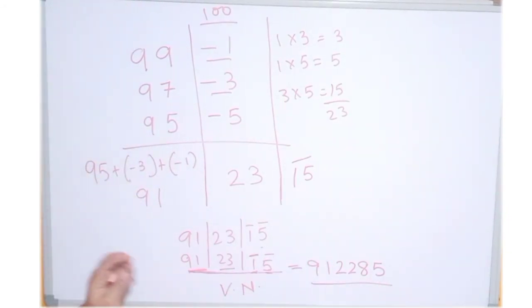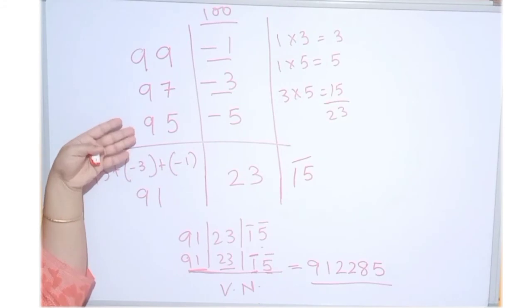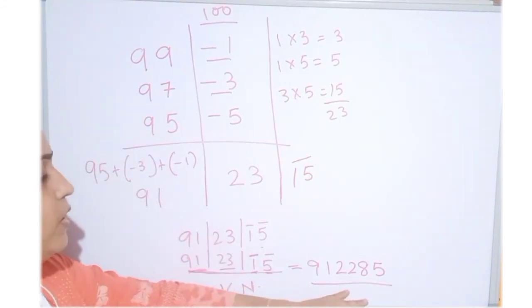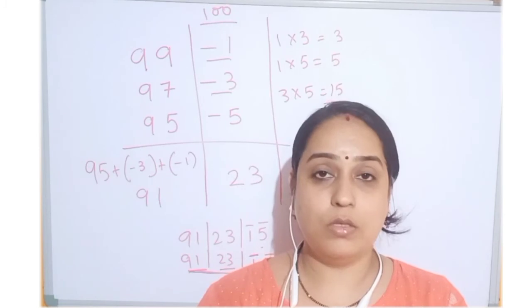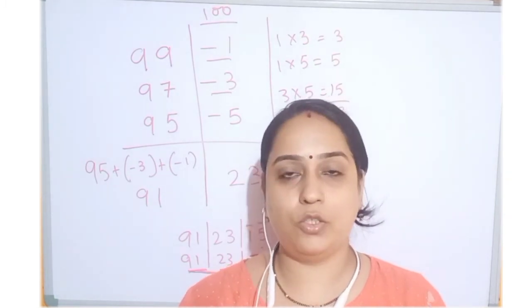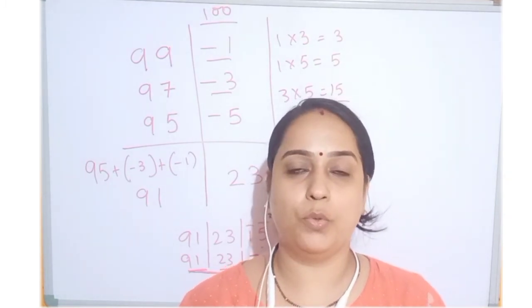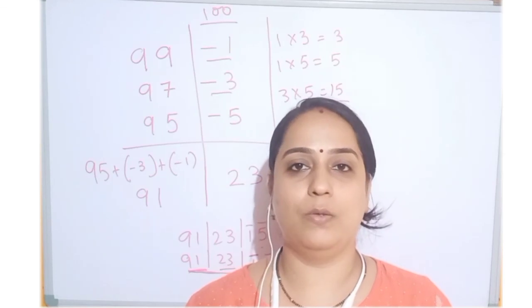So, the answer what we got for 99 into 97 into 95 is 912285. I hope the concept is clear to you now. Make sure you do the practice more and more so that you don't have any doubts.